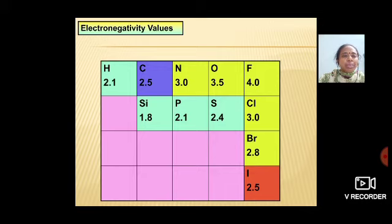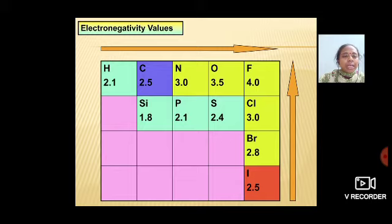Electronegativity values in the periodic table: from left to right, the electronegativity value increases. From top to bottom, it decreases.